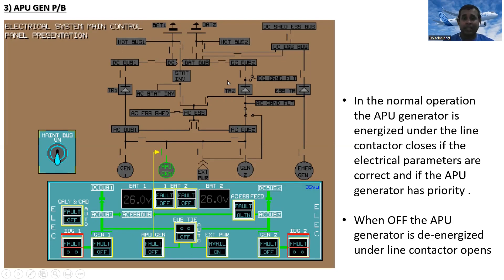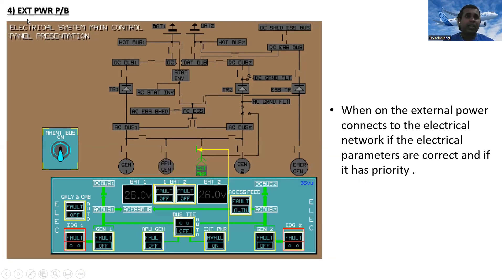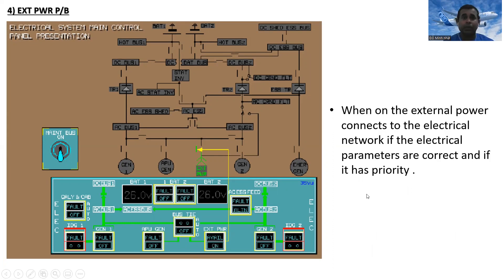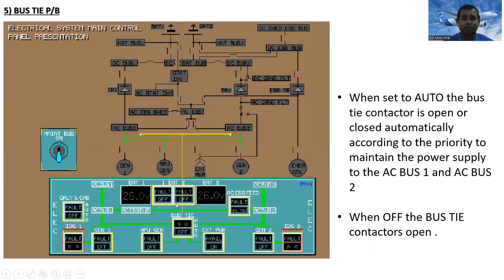Next is the external power push button. When on, the external power connects to the electrical network if the electrical parameters are correct, and it has priority.